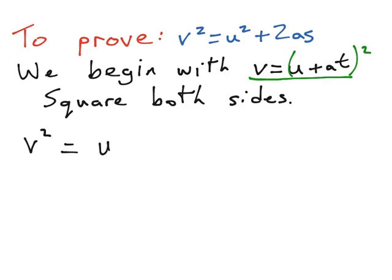you square the first thing, so that will be u squared. You square the second thing, which is going to be a squared multiplied by t squared. And twice the product means that we multiply the u by the at and double it. So it's going to be plus 2 times uat.